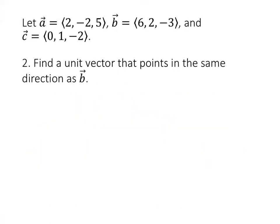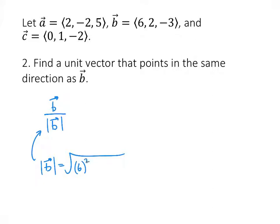In this problem, we want to find a unit vector that points in the same direction as B. So we want to normalize B, or unitize B, which means we take B and divide it by its length. The length of B is the square root of the sum of the squares of its components: 6² + 2² + (-3)² = 36 + 4 + 9 = √49, which is 7.